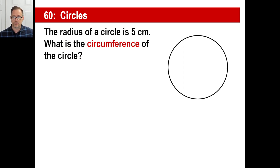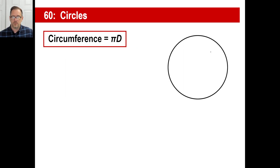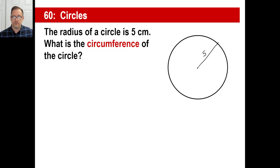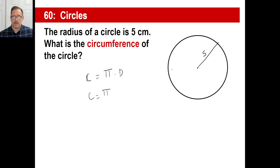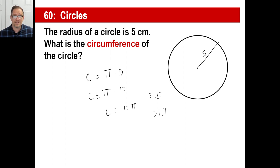The radius of a circle is five centimeters. What's the circumference? The circumference is pi times the diameter. If the radius is five, the diameter is ten. So the circumference is pi times ten — that's 10 times 3.14, which is 31.4. So if the radius is five, the distance around that circle is 31.4 centimeters.